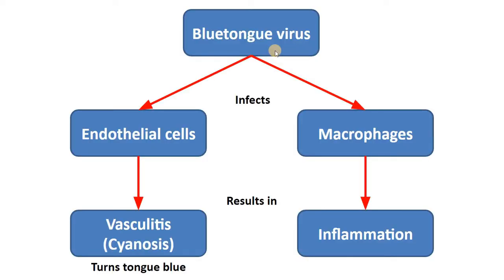More specifically about the pathogenesis, blue tongue virus within the host infects endothelial cells lining blood vessels as well as macrophages. Infection of endothelial cells of blood vessels will eventually cause vasculitis and lead to leakage of blood content in the form of hemorrhage, edema, and fibrin deposition, as we will see shortly under the microscope. All these microscopic changes will result in macroscopic cyanosis, which is the blue discoloration of tissues, which are the tongue and mucous membranes of blue tongue disease.